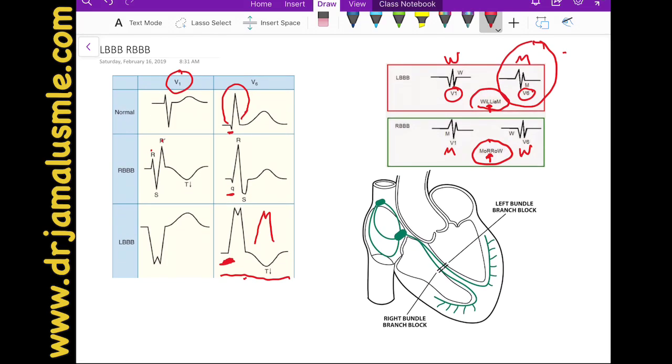And this is how you diagnose left bundle branch block and a right bundle branch block, but remember that the QRS duration in those blocks have to be more than 120 milliseconds.